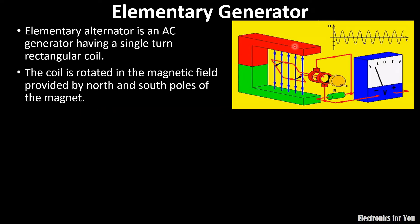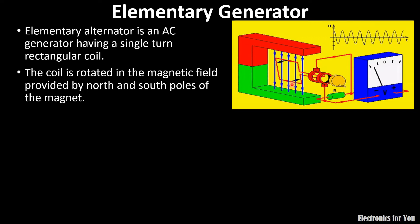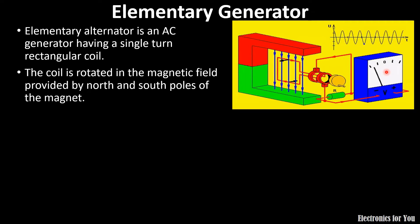This is an AC alternator — it has a magnet with a north pole and a south pole. The magnetic lines of force are generated at the north pole and end at the south pole. You can see it is having a single rectangular coil, that's why it is an elementary alternator. It is rotated in the magnetic field, and the voltage is generated by Faraday's law of electromagnetic induction.